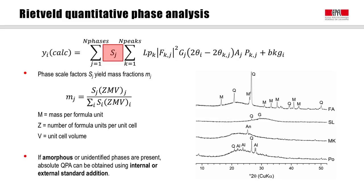It should be noted that only relative proportions of weight fractions can be obtained if the sample contains amorphous phases, or if any additional crystalline phases were not included in the Rietveld refinement. This approximation is often used in quantitative phase analysis of Portland cements or clinker, where one would expect only small or negligible levels of amorphous phase.